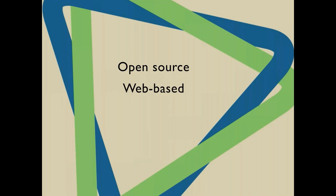CiviCRM is web-based, so it's not sitting on some internal server accessible only from your office. You can certainly limit access to an IP address if you want, but since it's web-based it can be accessed anywhere via a web browser — on the road, in another state, even another country. It's been internationalized, meaning it's been translated into several different languages like Spanish, German, French, Japanese, Polish, and Portuguese. It also has localization of addresses, dates, and currency — so if you're a UK company, you can have prices in pounds, and date and address formats can be customized based on your location.